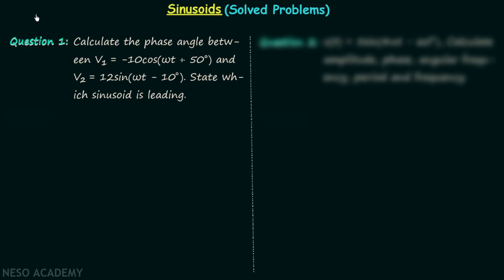We are going to solve two questions in this presentation. Question number one is: calculate the phase angle between voltage V1 and voltage V2, and also state which sinusoid is leading. Voltage V1 is equal to negative of 10 cos(ωt + 50°) and voltage V2 is equal to 12 sin(ωt - 10°).